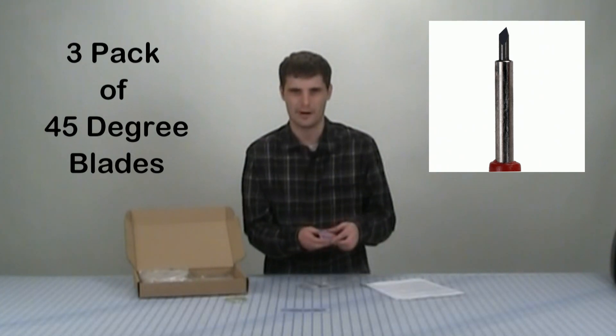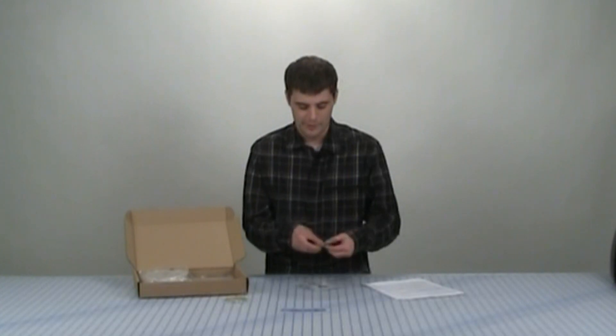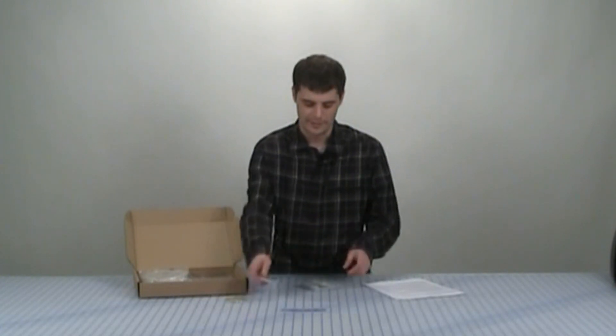Next thing that we're going to pull out is a small pack of blades. These are Roland standard cemented carbide blades. The ones that will ship with your machine are 45 degree blades. You should have three of them in here. We'll just set those aside as well.